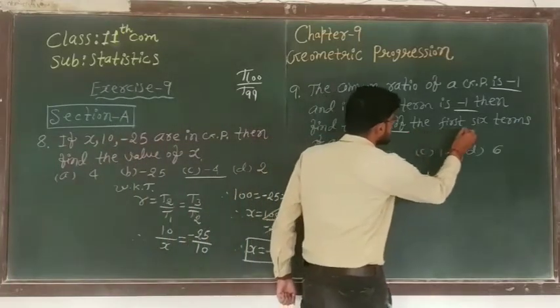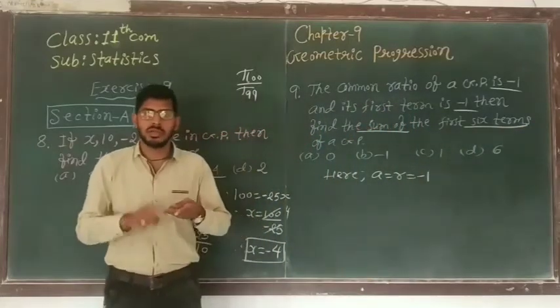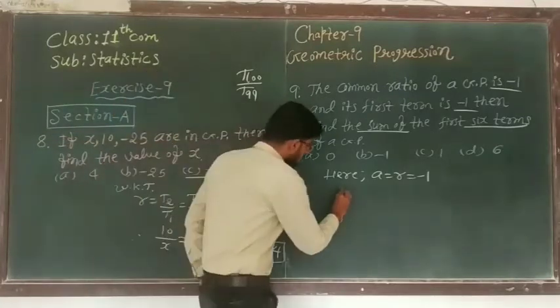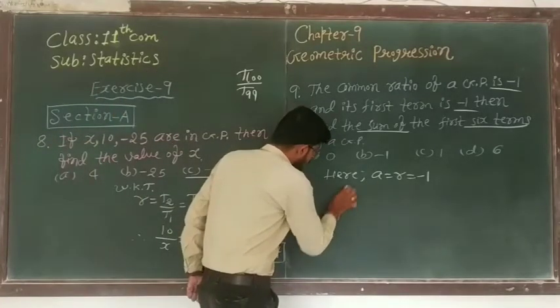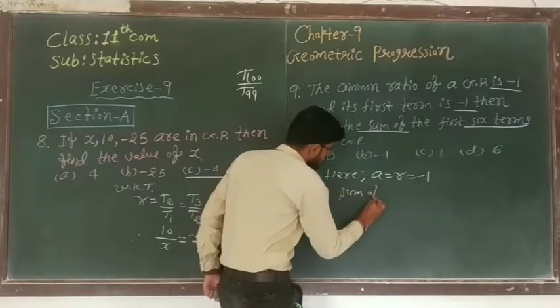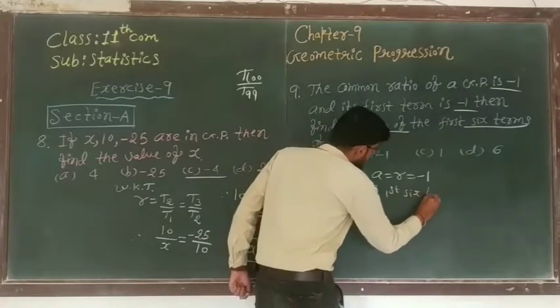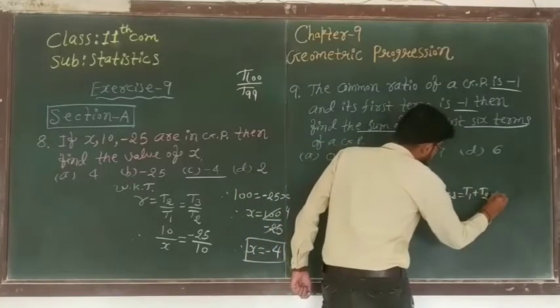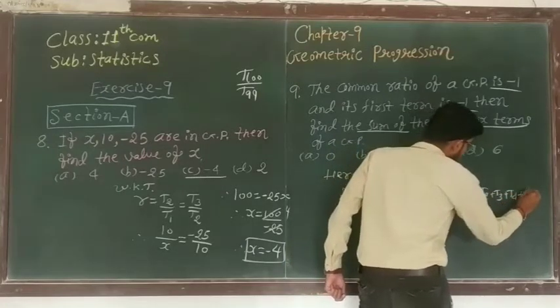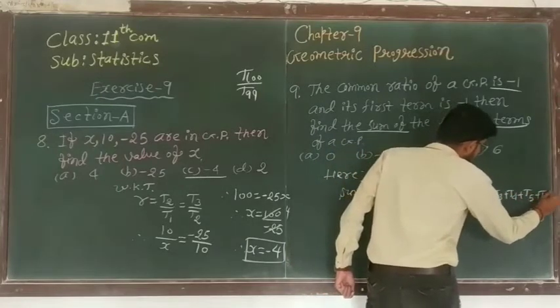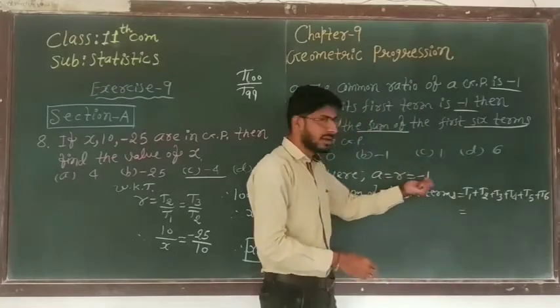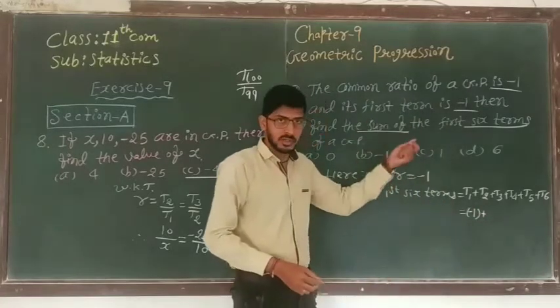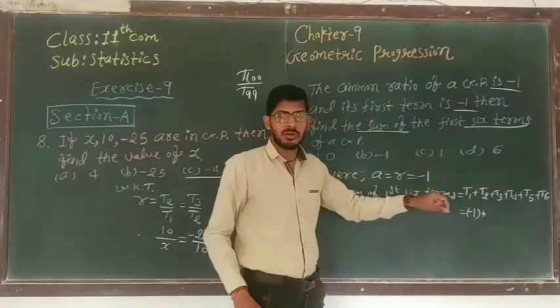Sum of first six terms equal to t1 plus t2 plus t3 plus t4 plus t5 plus t6. What is the first term? First term is minus 1. Common ratio is also minus 1. So we have to multiply minus 1 each time.